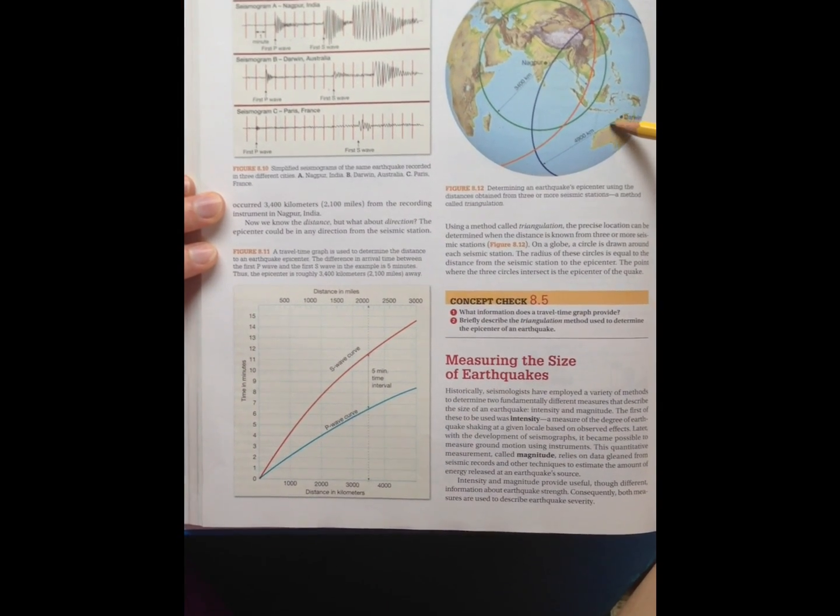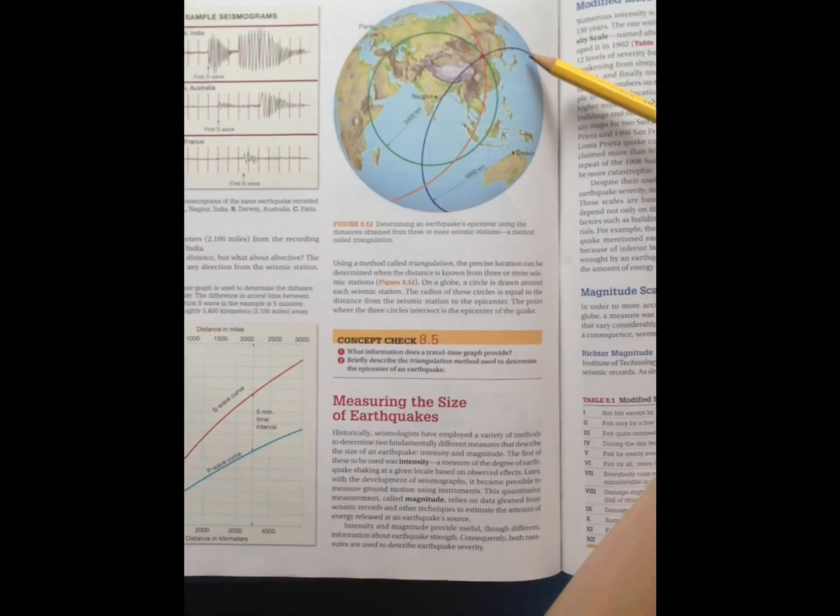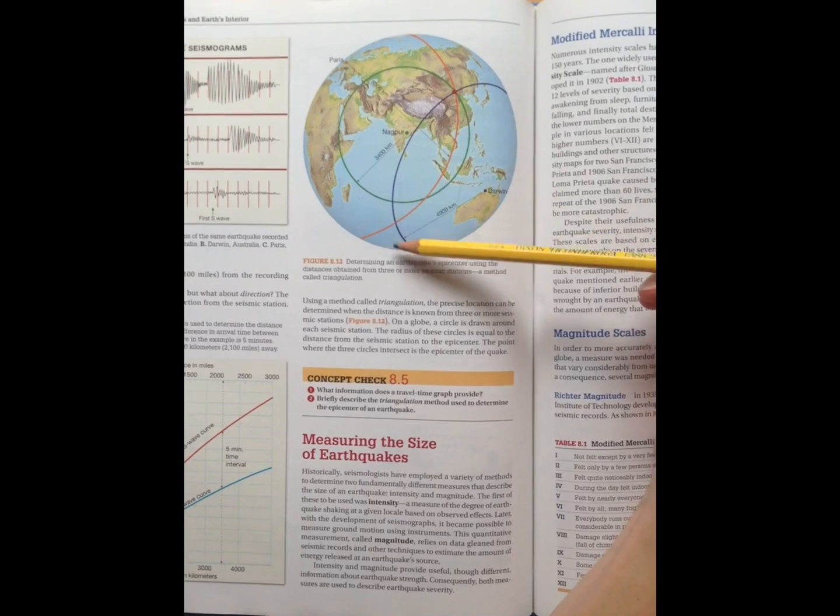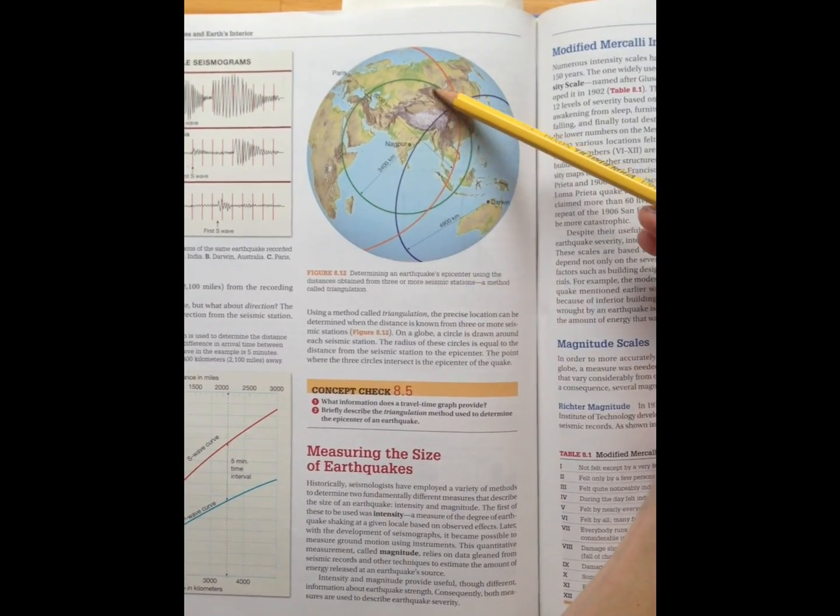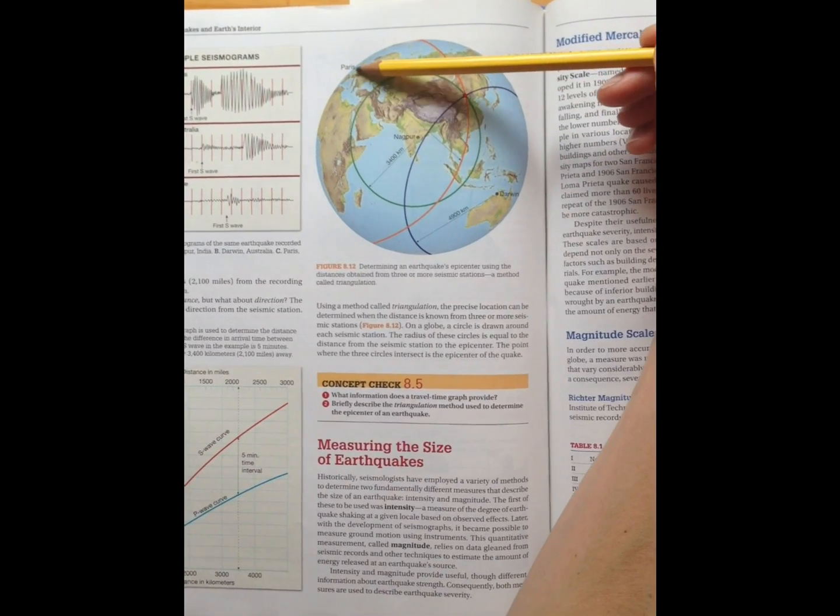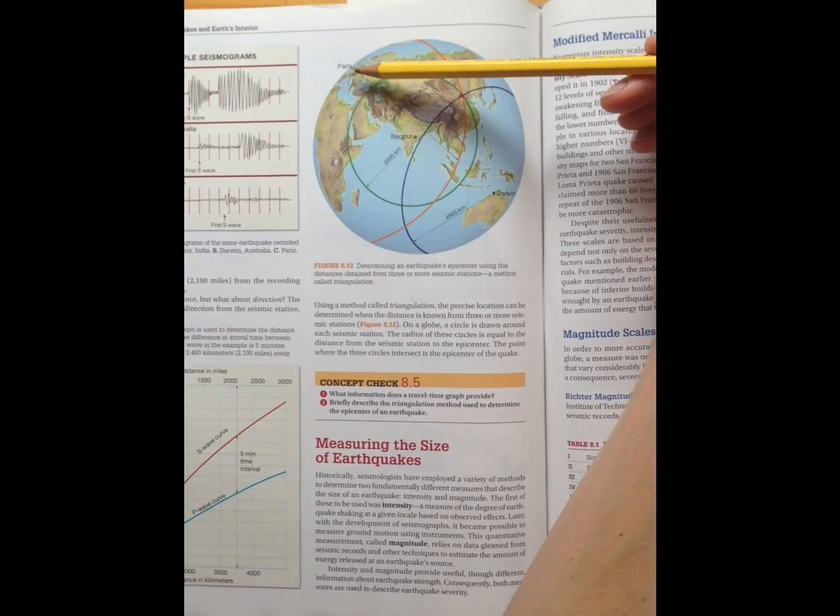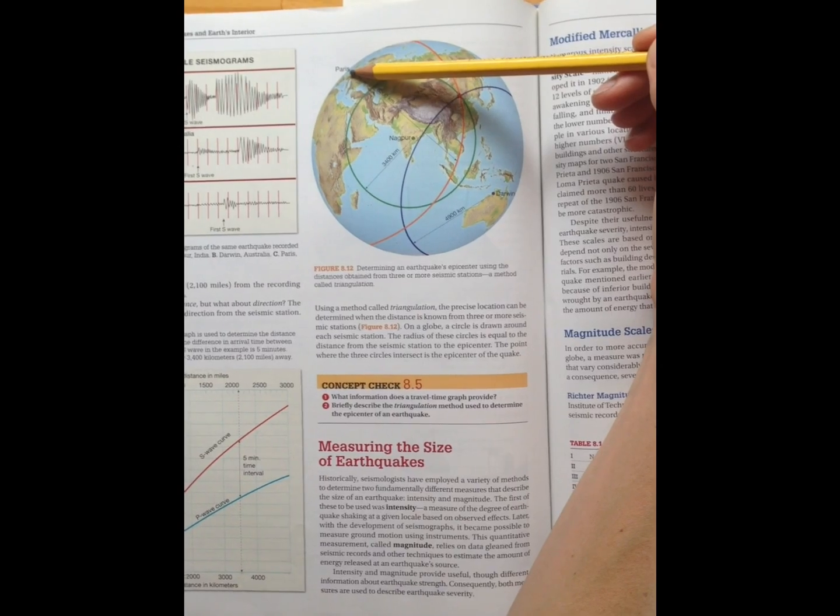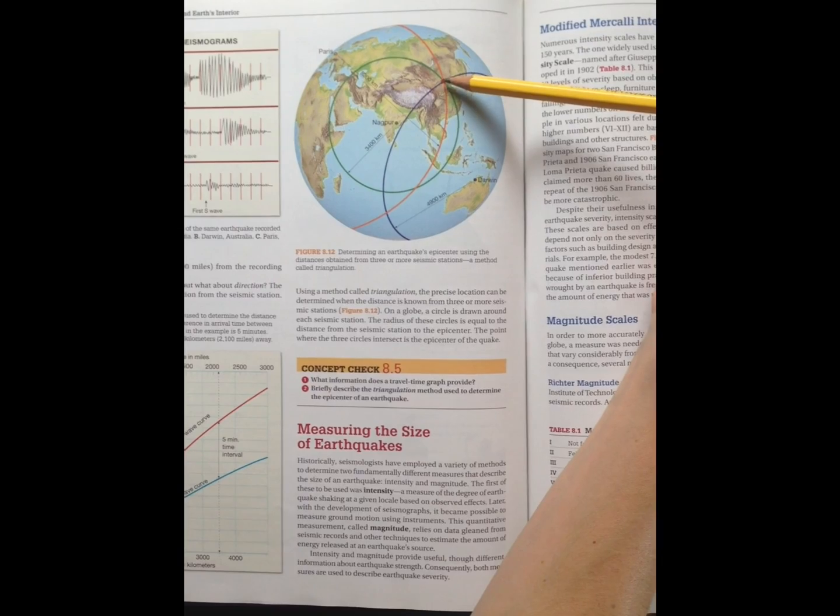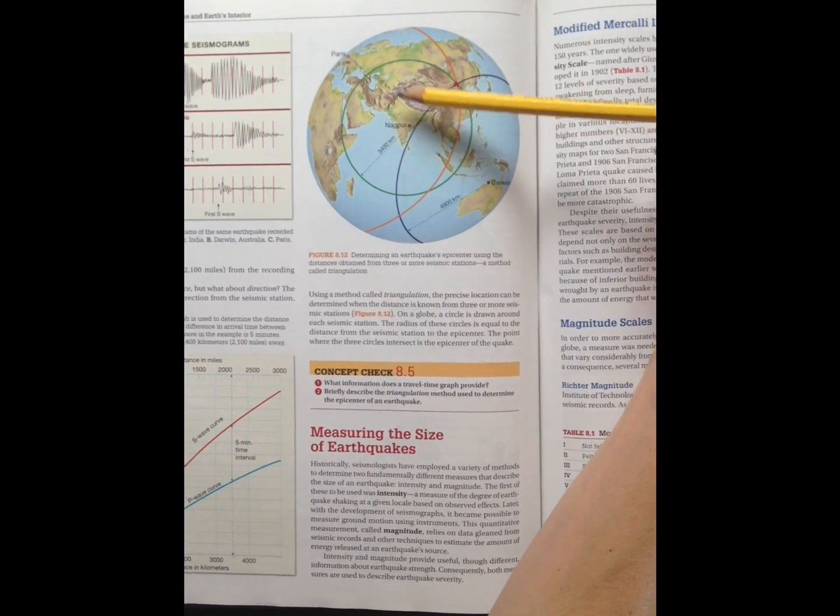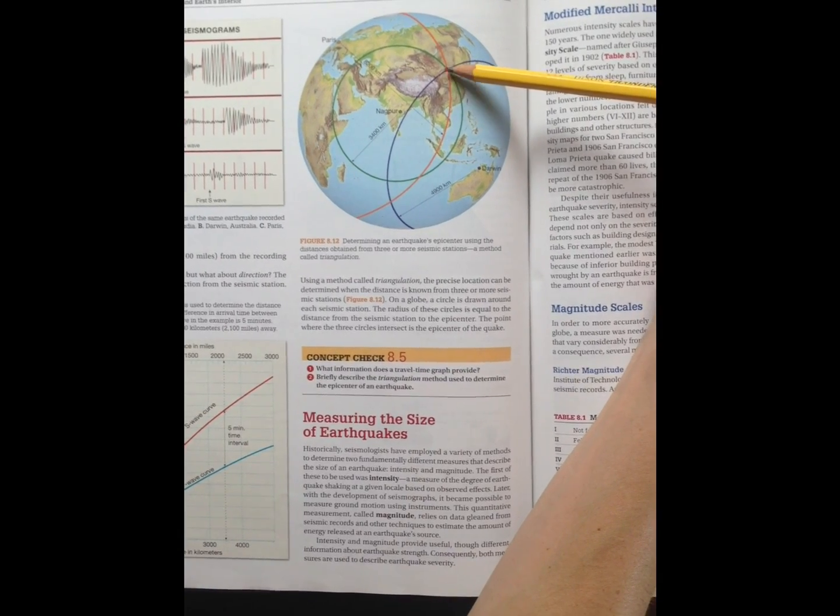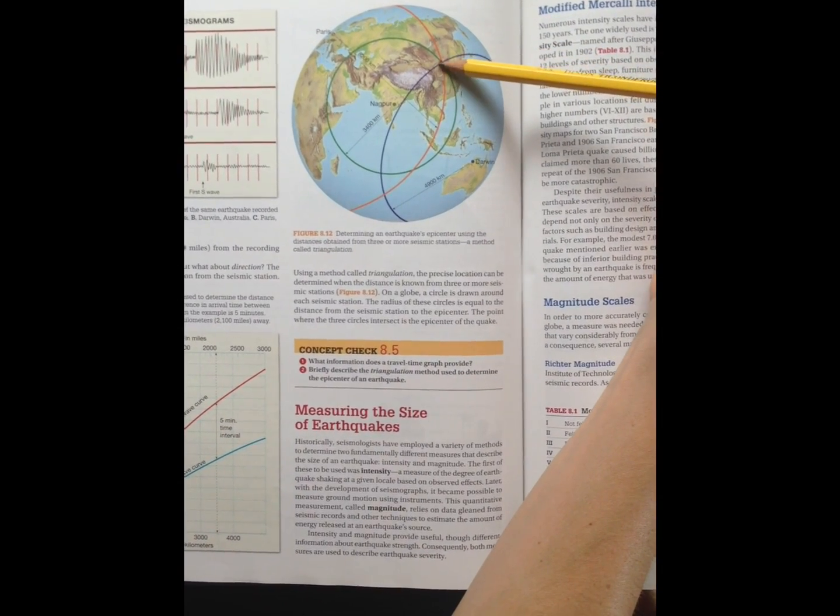So now we're starting to pinpoint. So where the circle around Australia intersects that radial line around India, we have one intersection point. Now if we get the data from Paris as well, how far away the earthquake occurred from Paris, where that radial line intersects all the other lines, we find the epicenter of the earthquake. So we've used three different locations to pinpoint the location where the earthquake actually occurred, somewhere over here in China.